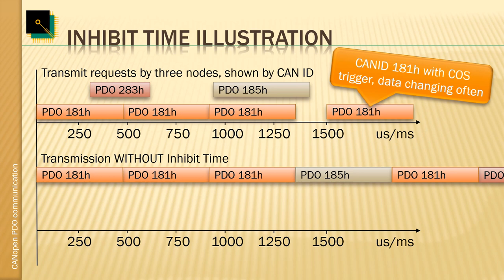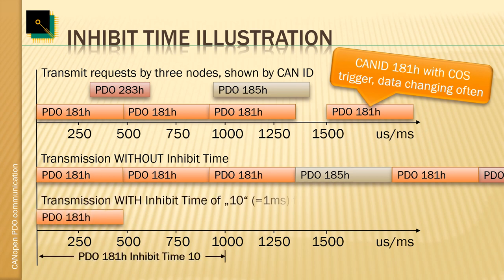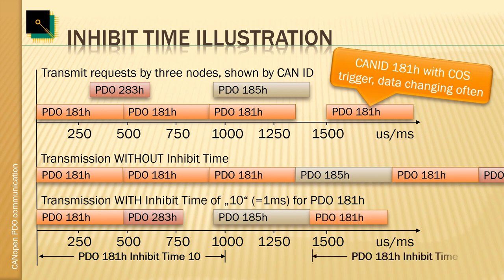Introducing an inhibit time of one millisecond already gives us a completely different picture. Here we can see 181 was transmitted, then the inhibit time started, so no further transmission of 181. That gives message 283 a chance to get on the bus. Even 185 will still get on the bus because its arbitration phase begins right before the inhibit time elapsed, and only after message 185 was completely on the bus will 181 be transmitted again.